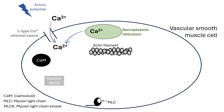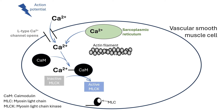The free calcium binds to a special calcium-binding protein called calmodulin. The calcium-calmodulin complex activates an enzyme called myosin light chain kinase (MLCK). In the presence of ATP, myosin light chain kinase phosphorylates myosin light chains, or MLC, found on the myosin heads.